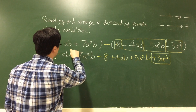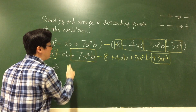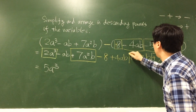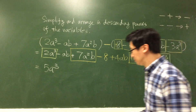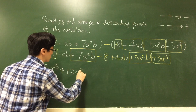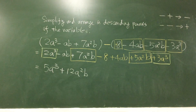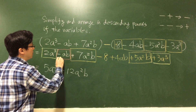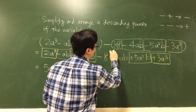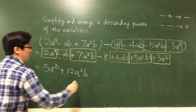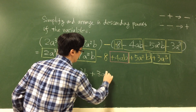A squared b. We have this: plus 7a squared b, and plus 5a squared b, and we get plus 12a squared b. And the next one will be ab: minus ab plus 4ab. We can add them together to get plus 3ab.